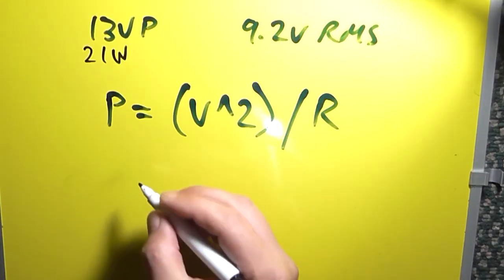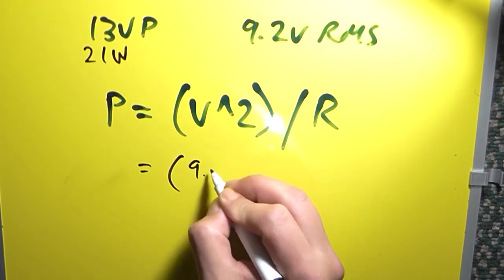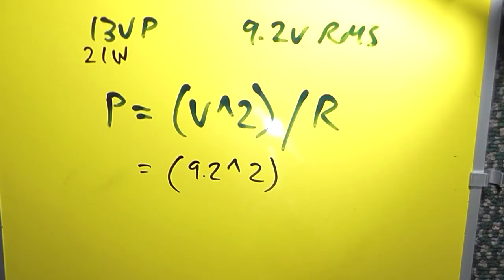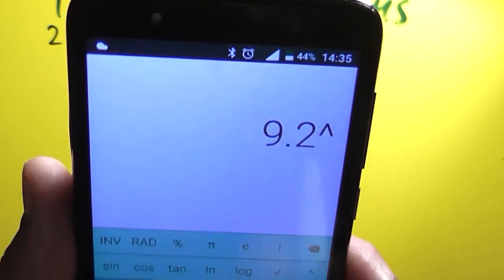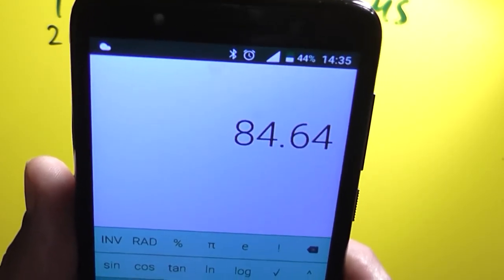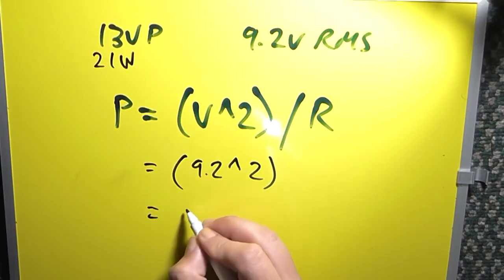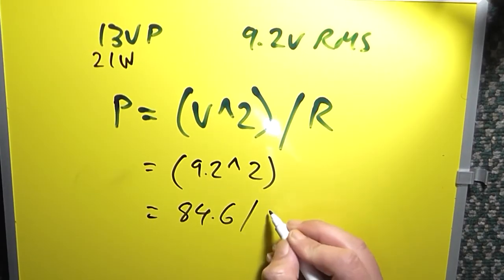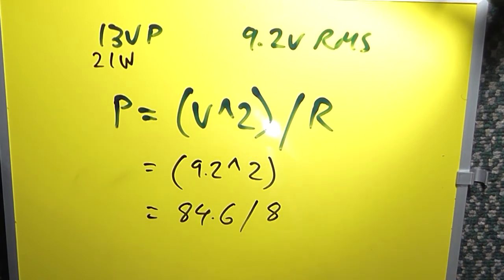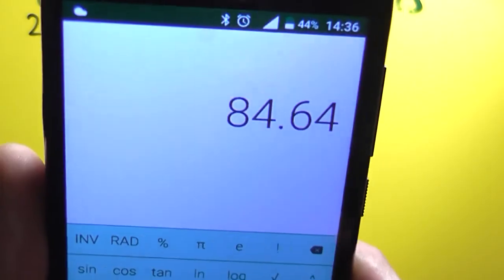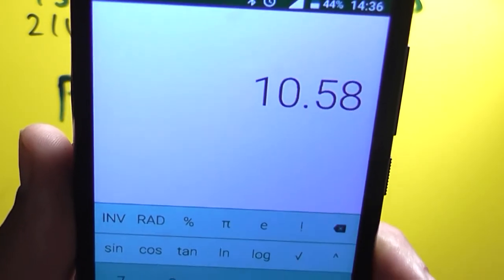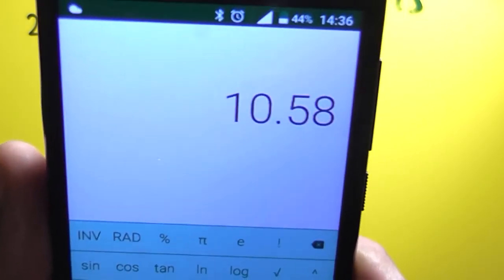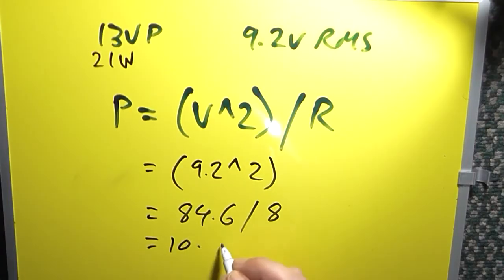Now for RMS — it's the same formula. So it's going to be 9.2 squared, which equals 84.6, divided by R load which is 8. Dividing that by 8 gives us 10.5 watts. Do not write RMS after it — just 10.5 watt.